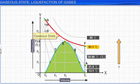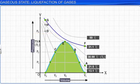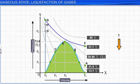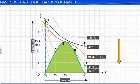Now, if we move vertically down from point G by lowering the temperature, on crossing the critical isotherm at point H, we get the liquid state.